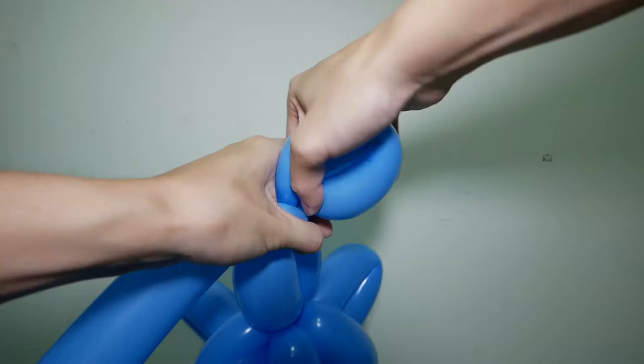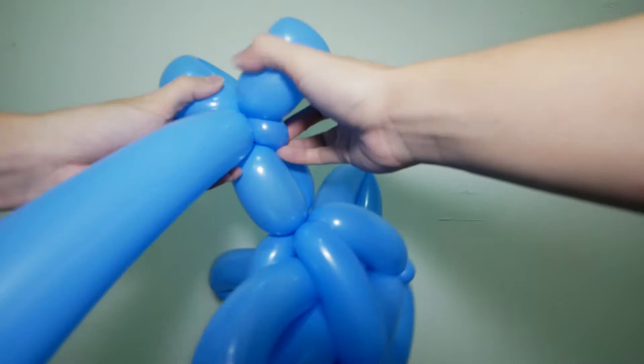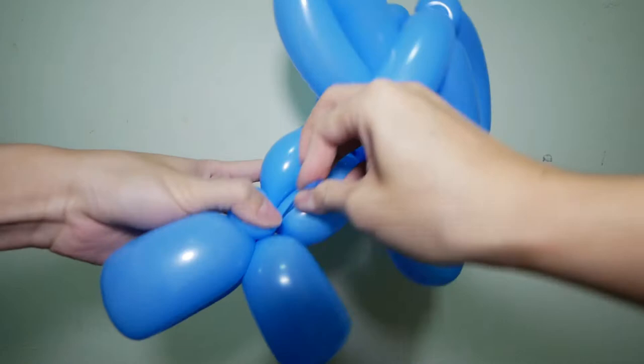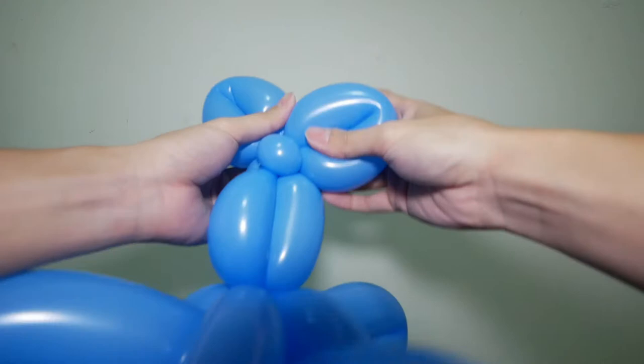Last thing to do is two loops. Now we can tear off the excess, wrap the remaining around randomly to secure it, and adjust everything nicely.